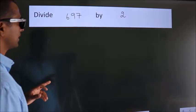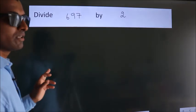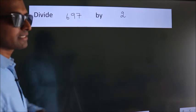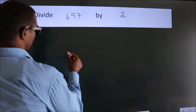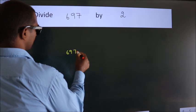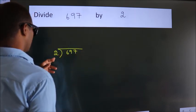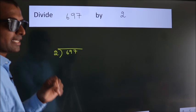Divide 697 by 2. To do this division, we should frame it in this way: 697 here, 2 here. This is your step 1.